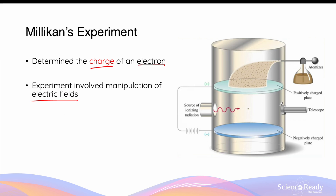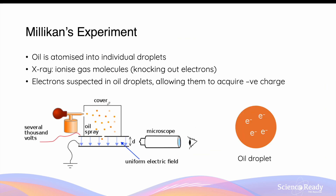This diagram is a simple representation of Milliken's apparatus. A chamber is divided into two parts. The first part contains oil droplets produced from the atomizer. The second chamber, at the bottom, involves the application of ionizing radiation and electric fields where the top plate is positive and the bottom plate is negative. In the top chamber, oil is atomized into individual droplets so that they can be analyzed by Milliken.